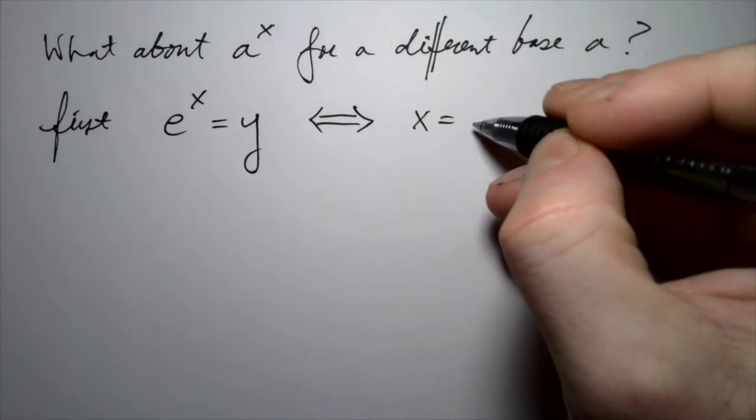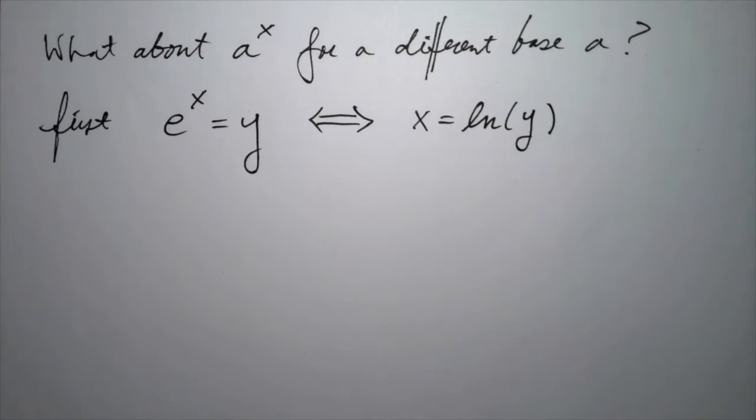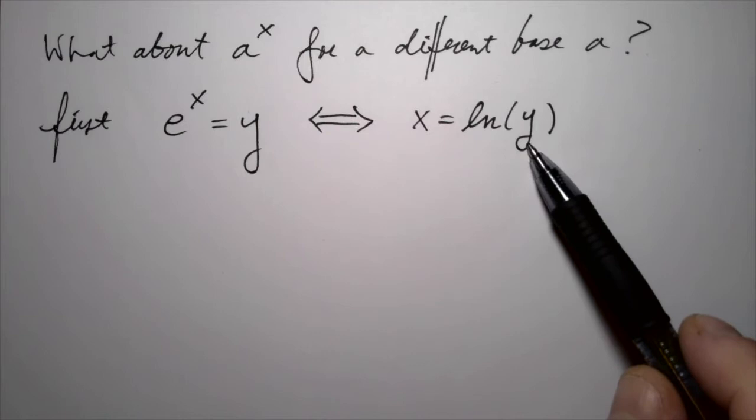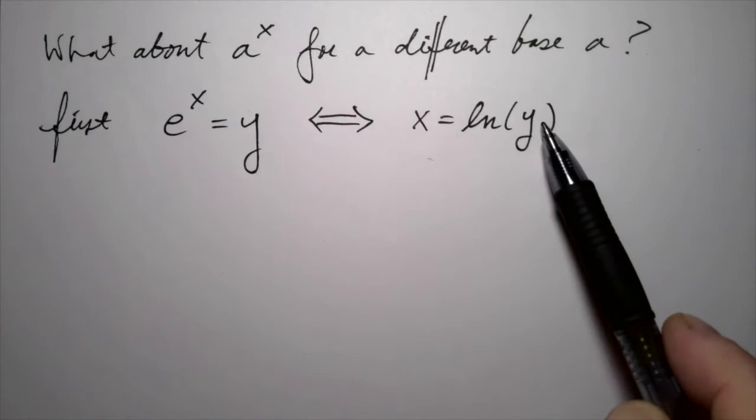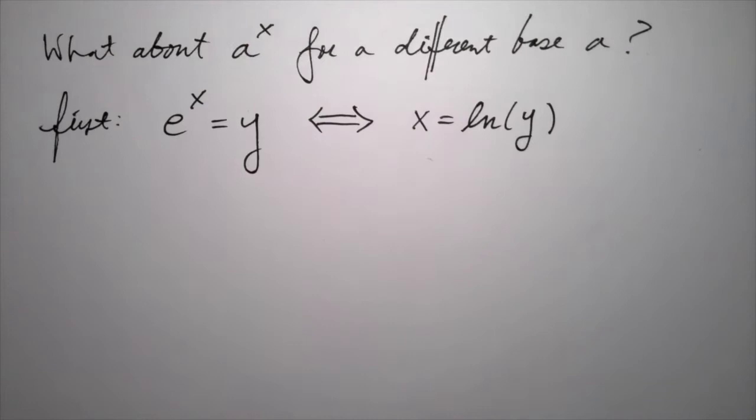In other words, if you say that e to the x is equal to y — if you have to raise e to the x power to get the number y — that's the same thing as saying that the natural log of y is x. Natural log of y just means: what do I have to raise e to in order to get y? That's the basic property of the natural logarithm; it's the inverse of the exponential function.